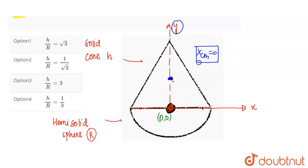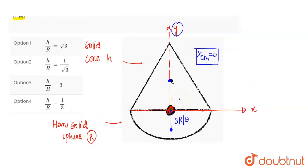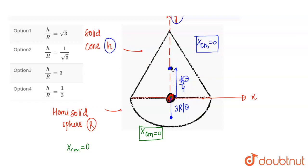इसी तरह से hemisphere का भी individual center of mass y-axis पर ही lie करता है। Hemisphere का center of mass उसके base से 3R/8 नीचे होता है। Origin से नीचे है तो distance negative लोगे। अलग-अलग individually देखें तो cone और hemisphere दोनों का x center of mass 0 है, तो x से relation नहीं मिलेगा। इसलिए हमें y center of mass की equation use करनी होगी। Cone का center of mass base से h/4 ऊपर होता है, इसे y1 मान लेते हैं।